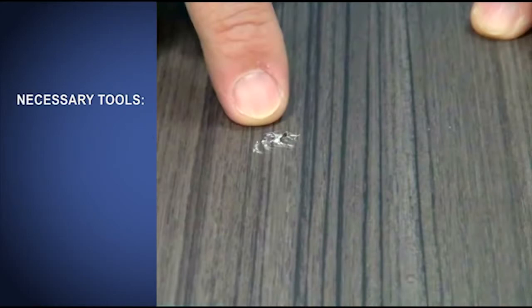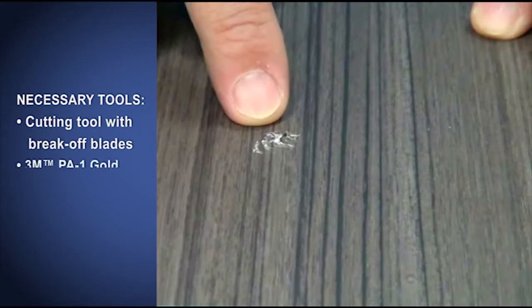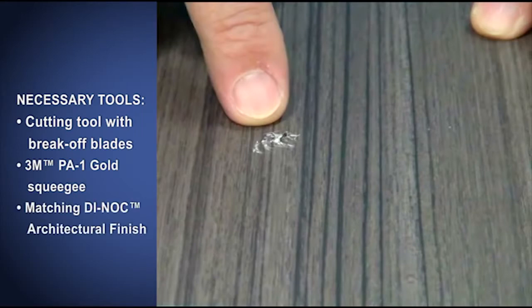You will need these tools: a cutting tool with break-off blades, a 3M brand applicator PA-1 gold squeegee that is clean and nick-free, and a piece of Dynok brand architectural finish that matches the damaged area.